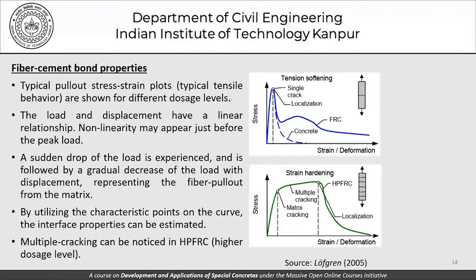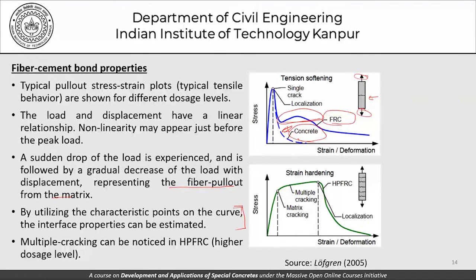Typical pullout stress-strain plots show that when plain concrete is loaded to a single crack, it simply collapses with no additional load-carrying capacity. In fiber reinforced concrete there is a load drop, but still some capacity to take additional strains and deformation. The load-displacement relationship is linear initially; non-linearity may appear just before peak load, followed by a sudden drop, then a gradual decrease representing fiber pullout from the matrix. By utilizing the characteristic points on the curve, interface properties can be estimated.